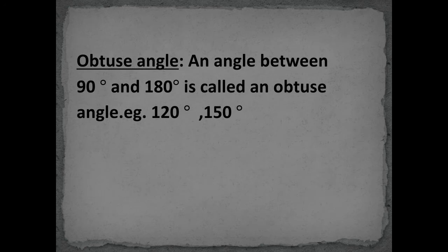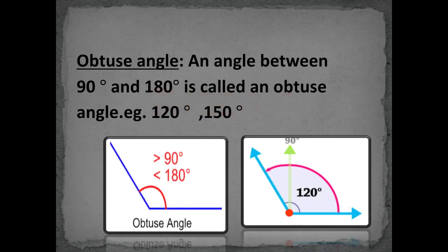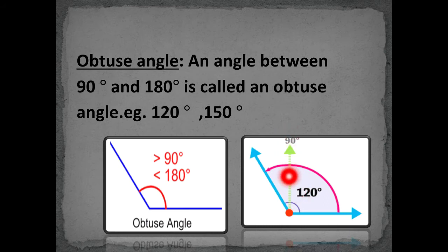The next type is the obtuse angle. An angle whose measure lies between 90 degrees and 180 degrees is called an obtuse angle. For example, 120 degrees and 150 degrees are obtuse angles. Here we have an angle of 120 degrees — see, this measures more than 90 degrees, that is why 120 degrees is an obtuse angle.